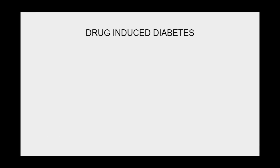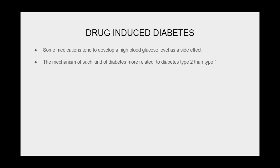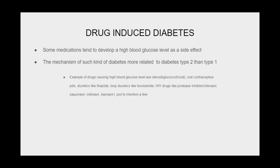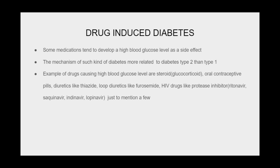Drug-induced diabetes: some medications tend to develop high blood glucose levels as a side effect, with a mechanism more related to type 2 than type 1 diabetes. Examples of drugs causing high blood glucose levels include steroids (glucocorticoids), oral contraceptive pills, diuretics such as thiazide and loop diuretics like furosemide, and HIV drugs such as protease inhibitors including ritonavir, saquinavir, indinavir, and lopinavir, just to mention a few.